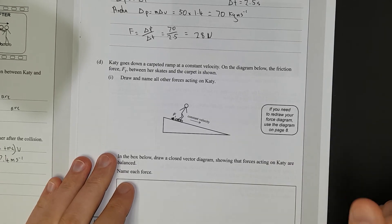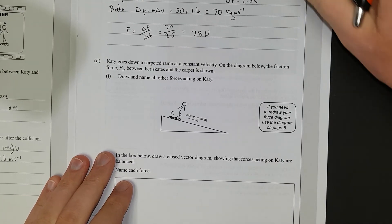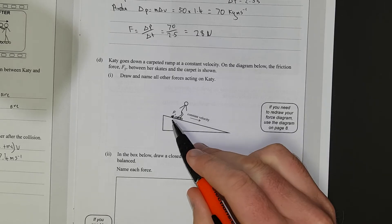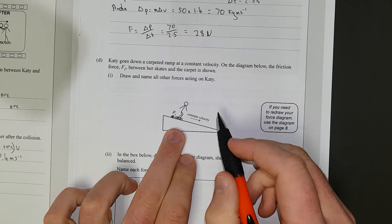Next one. Katie goes down carpeted ramp at a constant velocity. Draw on the diagram below the friction force. It's on the diagram below the friction force is drawn, yet there it is right there. Between here, skates, and a carpet is shown. Draw and name the other forces acting on Katie.